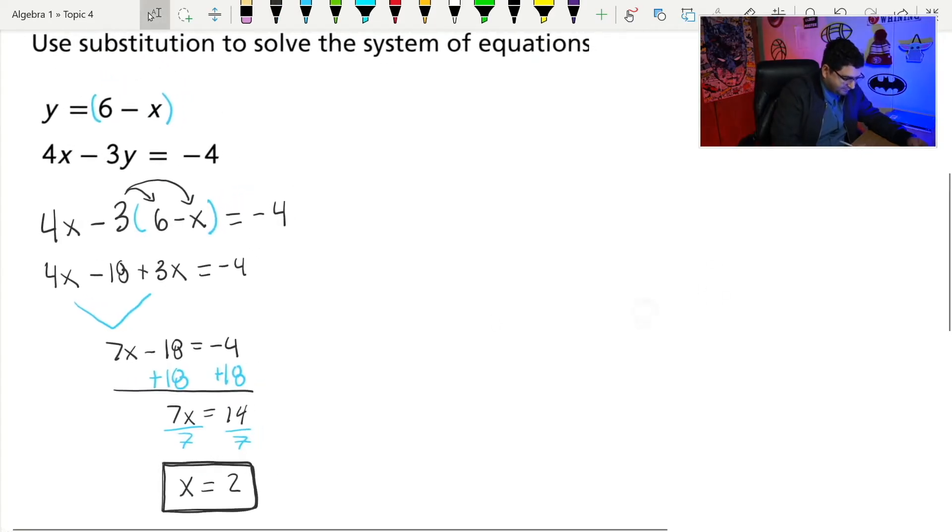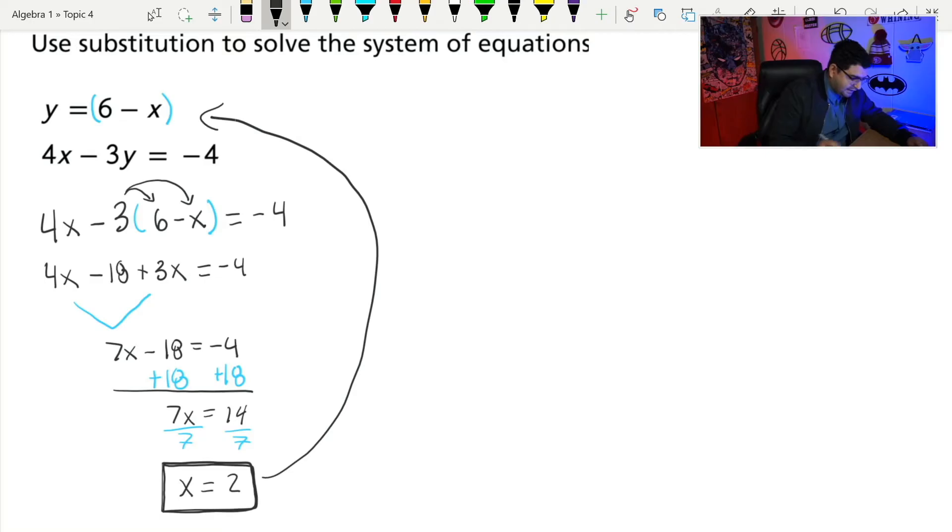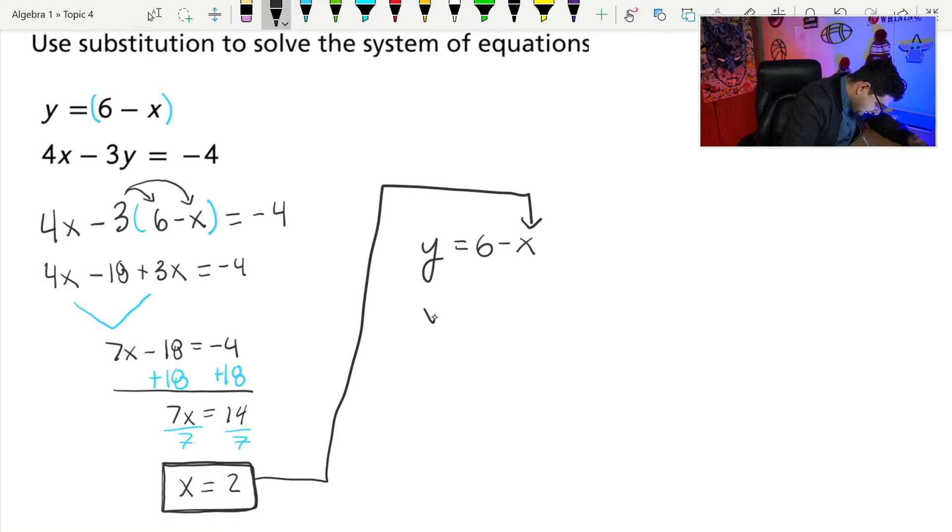Now that I know x, I can use this top equation. I can plug that into the top equation and find out what y would be. Now that I know x is two, if y is equal to six minus x, I can plug x in and find out what y would be. So let's go ahead and we're actually going to write it off to the side though. If y is equal to six minus x, I'm going to take this guy and plug him in right here. That would give me y equals six minus two. So that means y equals four.